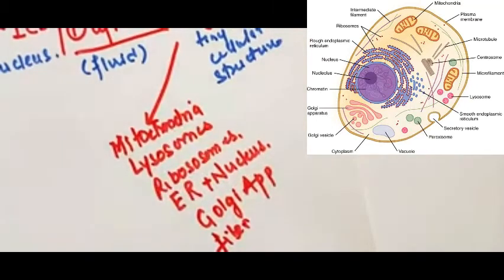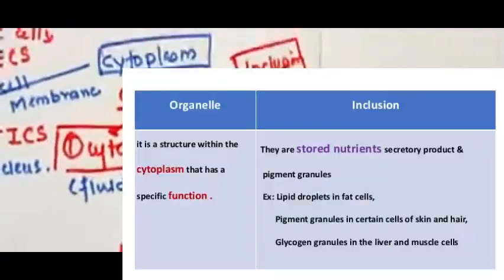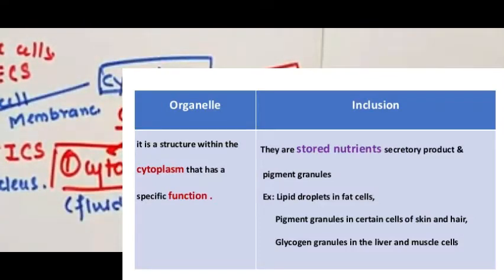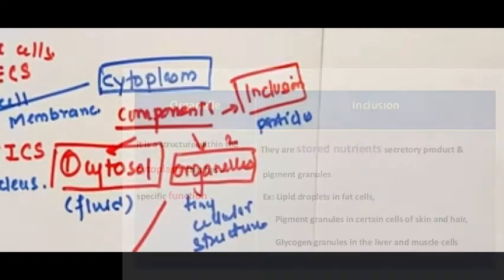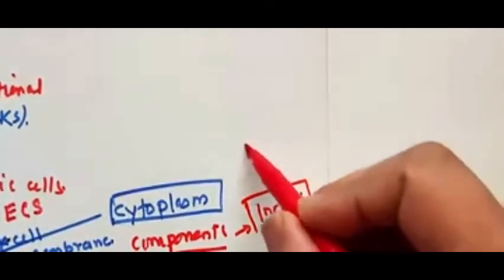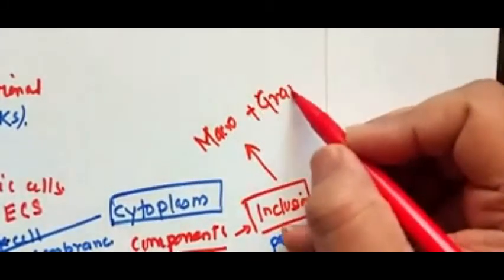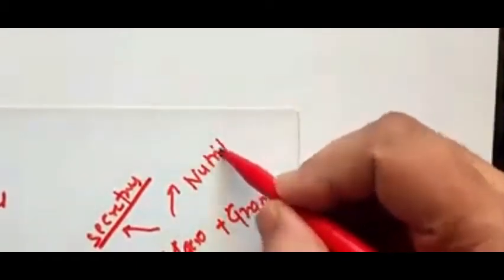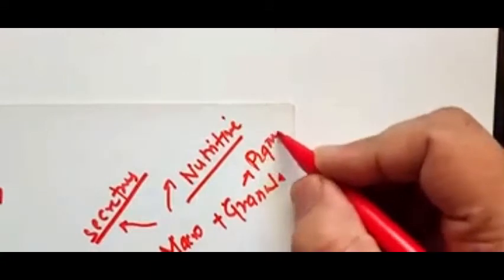Regarding cytoplasmic inclusions — these are particles temporarily suspended in the cytoplasm. They consist of macromolecules and granules. Inclusions include nutritive particles required for healthy maintenance of the cell, and pigment granules. The best example of a pigment granule is melanin pigment found inside the skin.